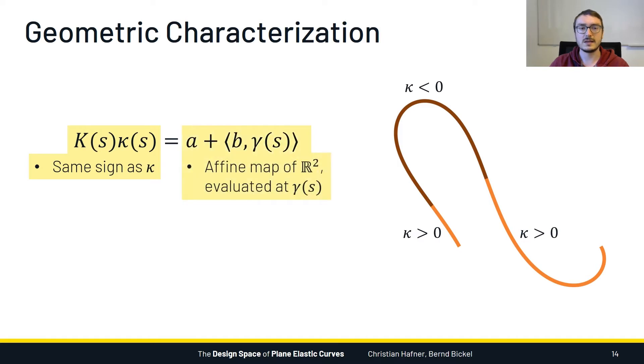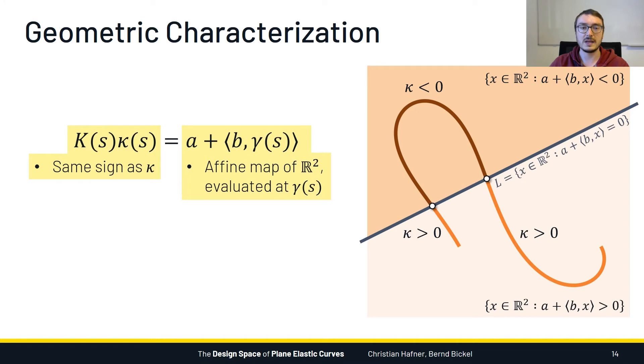Next let's look at the right hand side. We can see that this expression has the form of an affine map of the plane with coefficients A and B, evaluated at the curve points gamma. Affine maps have the property that they always split the plane into a positive and negative half-space. And what we could do for this example curve is to pick A and B in such a way that these two half-spaces perfectly agree with the positively curved and negatively curved parts of the curve. The result is that the line which separates these two half-spaces intersects exactly the inflections of the curve.